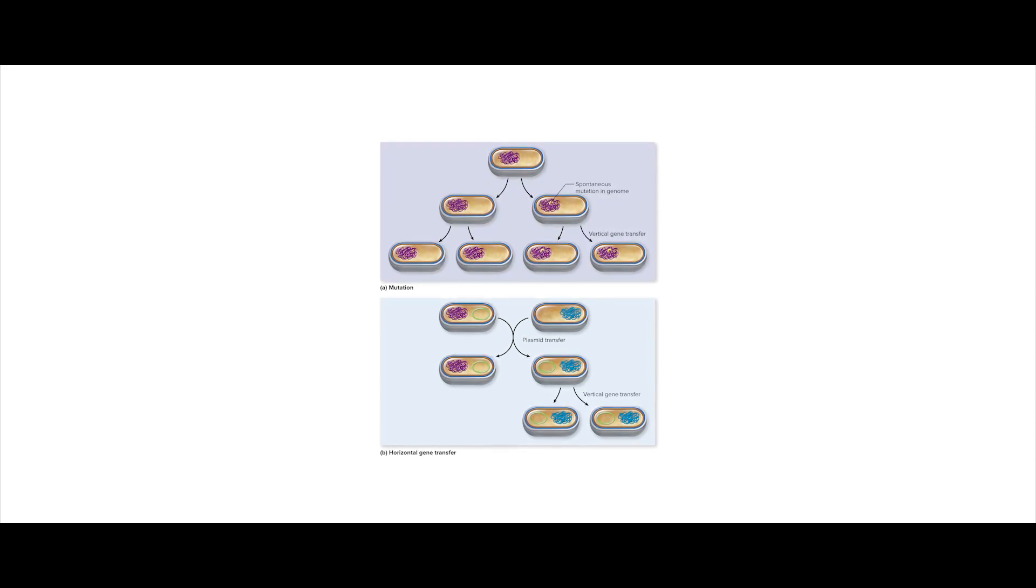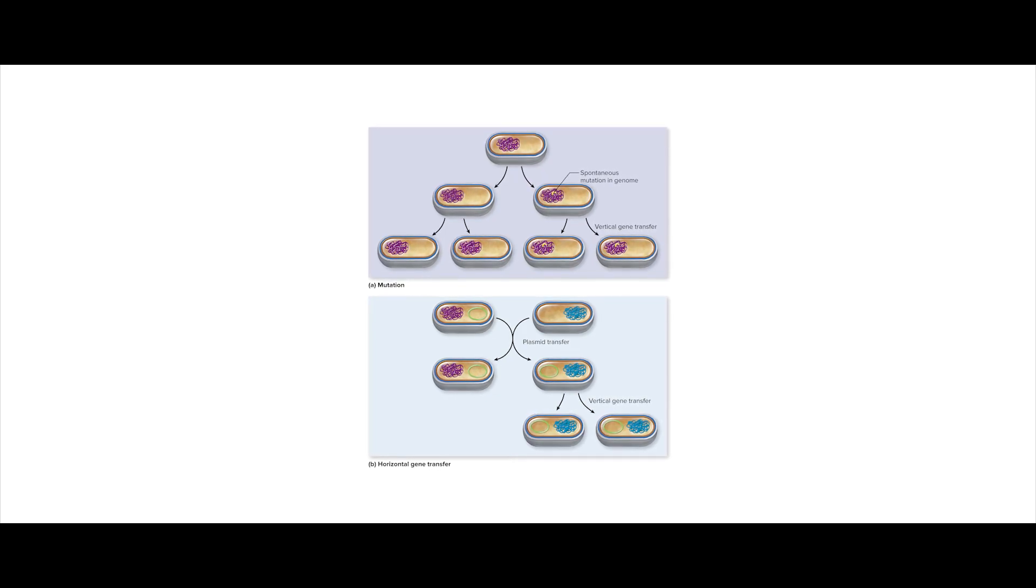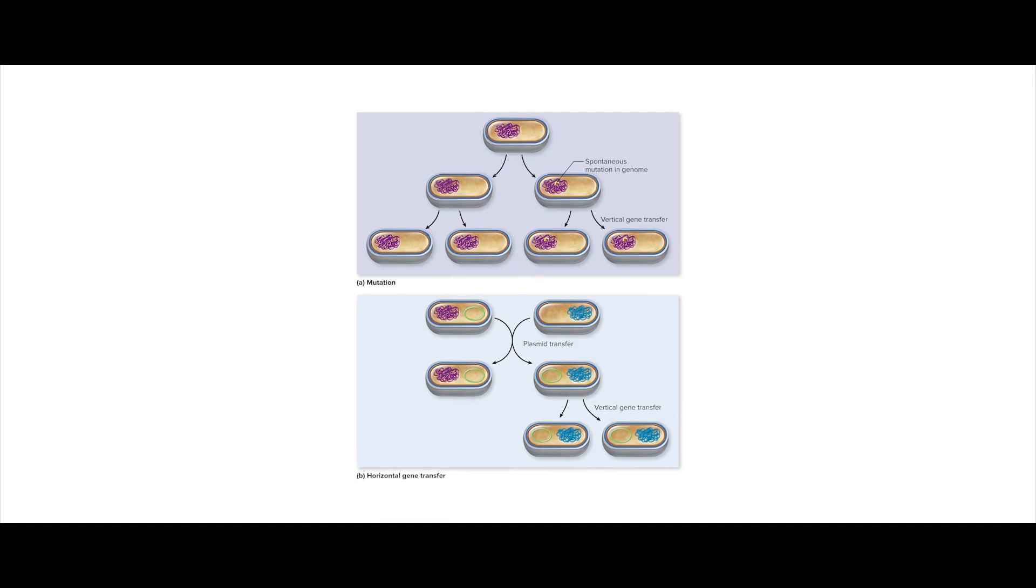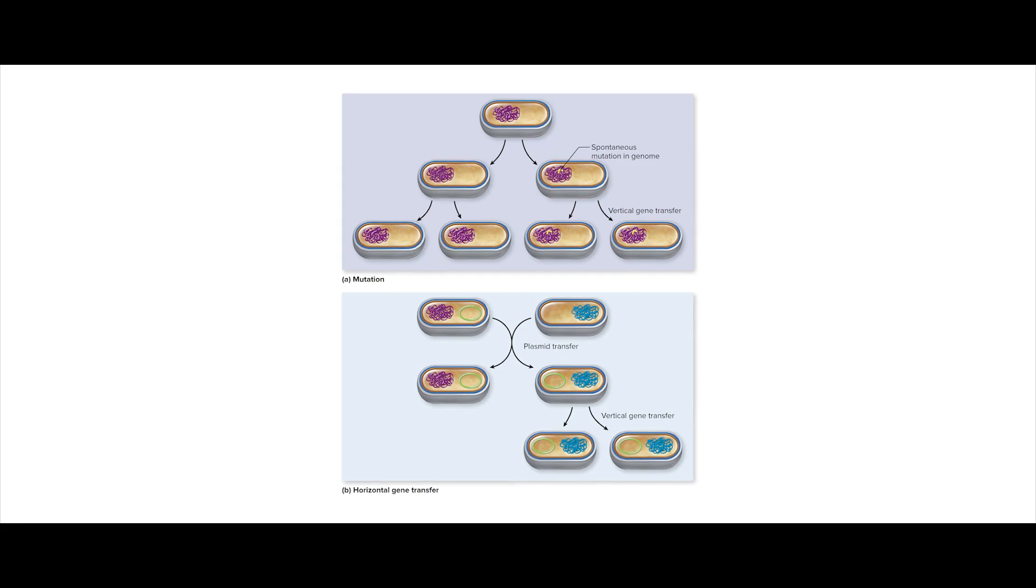Vertical gene transfer is passing DNA from parent to offspring, so horizontal gene transfer is passing DNA in any other way, which is hard to wrap your brain around when it comes to multicellular animals that cannot interbreed and can't literally take in DNA from the environment.